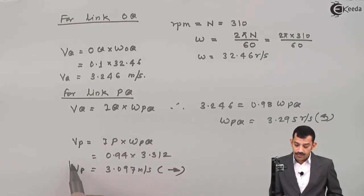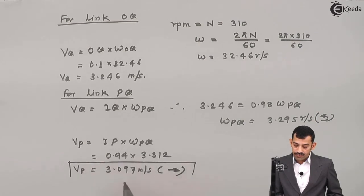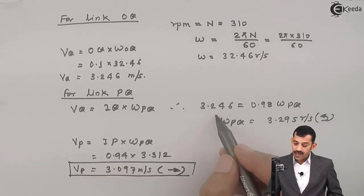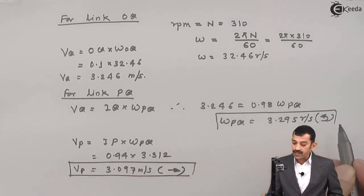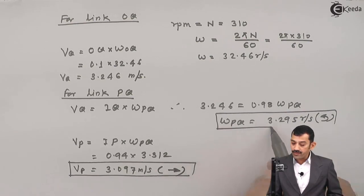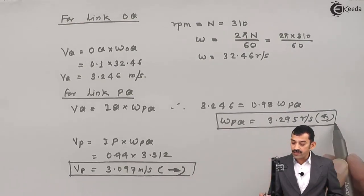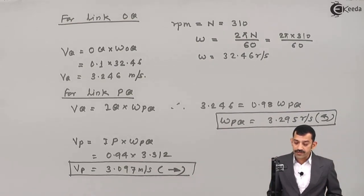Therefore VP comes out to be 3.097 meters per second, and the direction is rightward. So the two answers are: velocity of P is 3.097 m/s to the right, and angular velocity of link PQ is 3.295 radians per second anticlockwise.